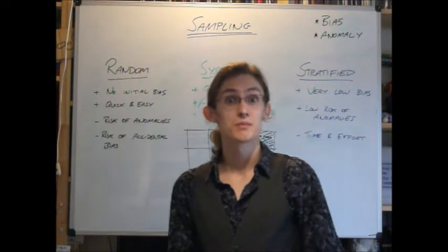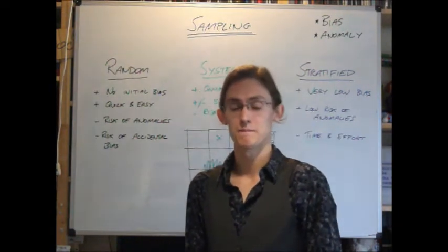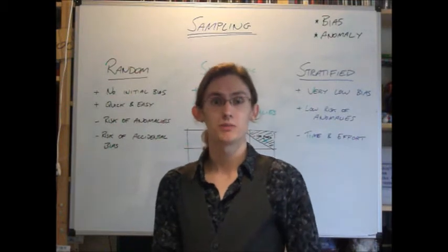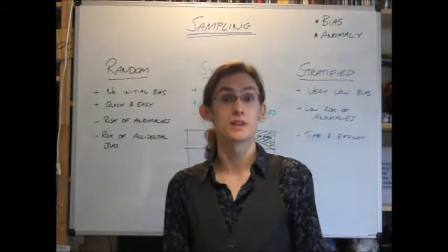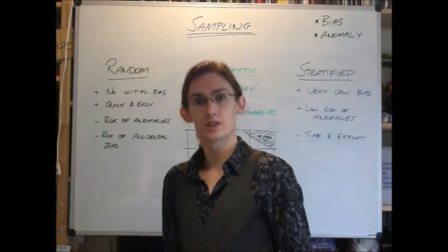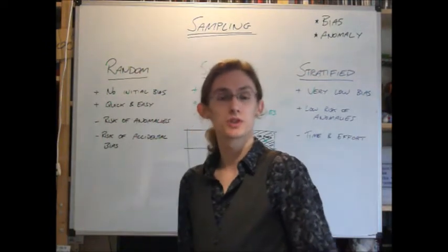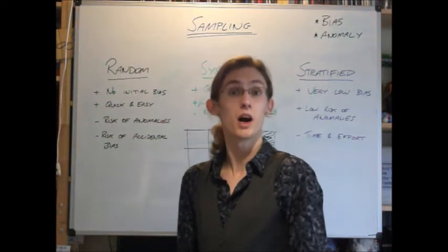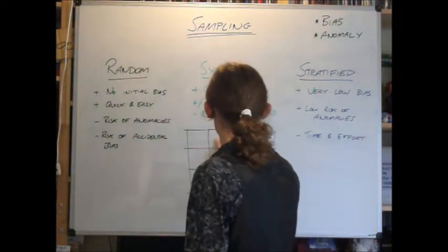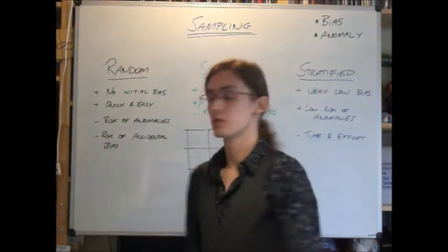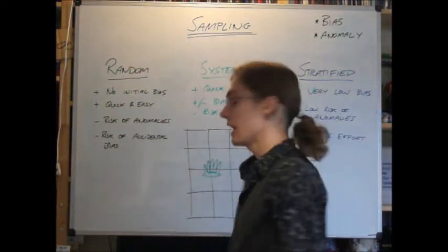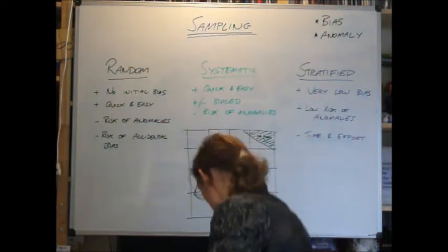We also can think about systematic sampling. Now, systematic sampling is based on a system. You pick every how many squares. So if we're looking at systematic, we might want to say, measure the temperature change from the car park. For this, we'd want to take a temperature at the car park, and then we might want to go in a line from there.